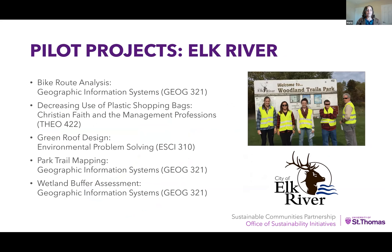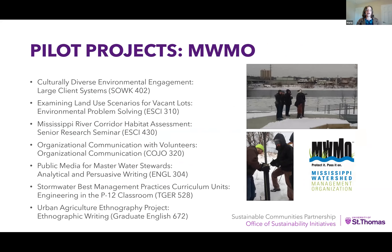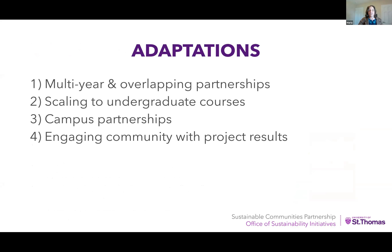Here are projects from each partner for spring 2016 to give you a sense of how it worked. We had projects with the City of Elk River, population about 25,000, with two economics classes with the City of Delano, population about 6,000, and projects with the Mississippi Watershed Management Organization, a government entity. Across the three partners, we had 13 projects for the first semester — 11 undergraduate and 2 graduate — across nine different disciplines.